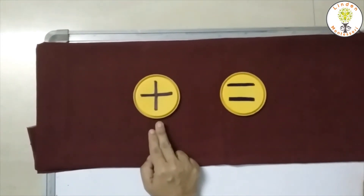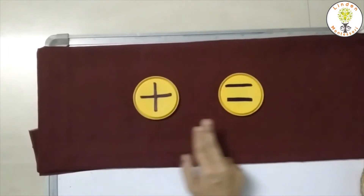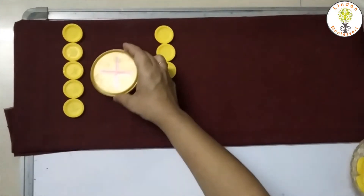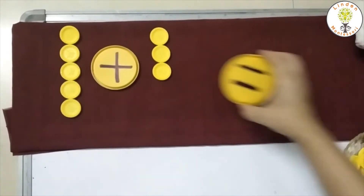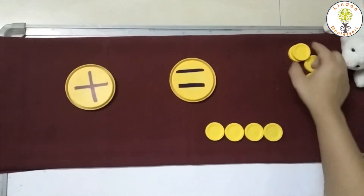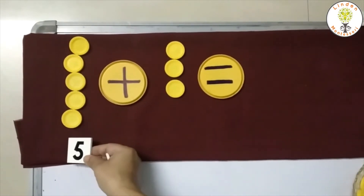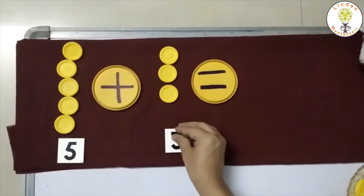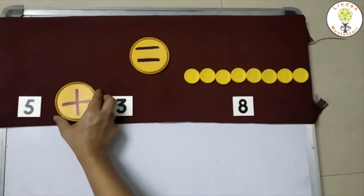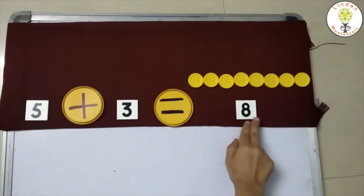This 'together with' is also called a plus sign. This 'is same as' is called an equal to sign. Five together with three is same as eight. So, five plus three is equal to eight. This is called an addition equation.